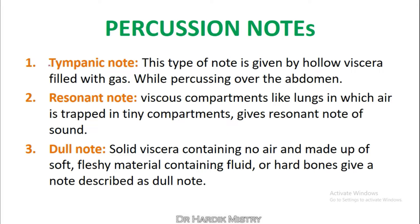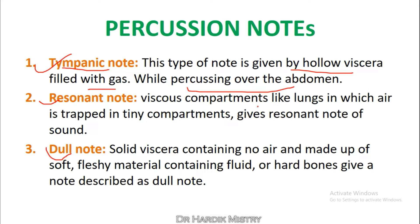There are three types of percussion notes: first, tympanic; second, resonant; and third, dull. The tympanic note is given by hollow viscera filled with gas — while percussing over the abdomen you will find the tympanic note. The resonant note comes from viscous compartments like lungs, in which air is trapped in tiny compartments.